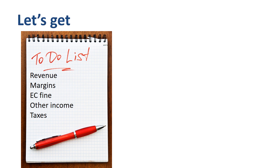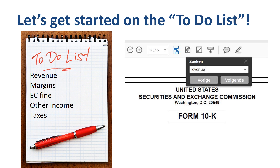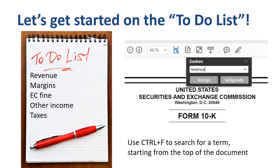You can read all 105 pages of the annual report from start to finish, which would take a while, or use the search function in Adobe Acrobat Reader. Use the key combination Ctrl+F to bring up the dialog box, type in the search term, and use that to browse through the document. If you want to do your own research first, this would be a great place to pause the video and come back to compare your notes.